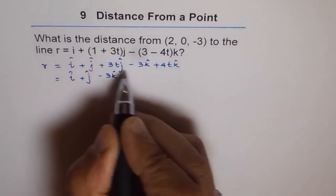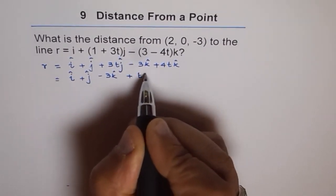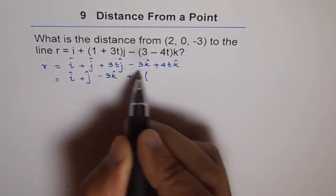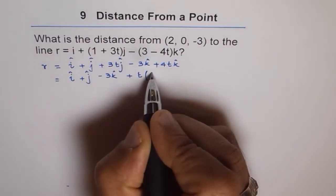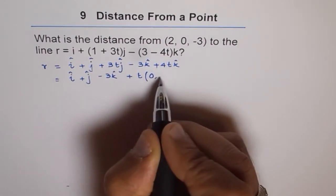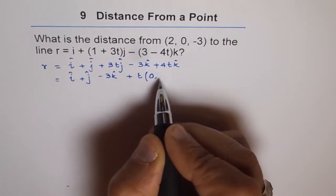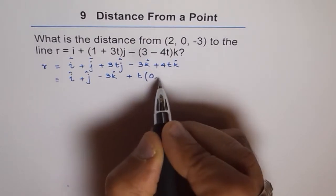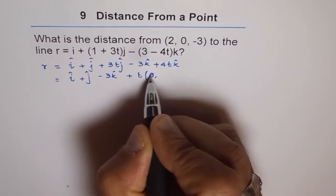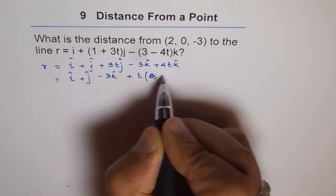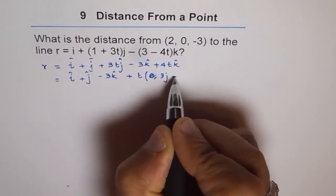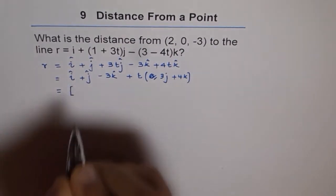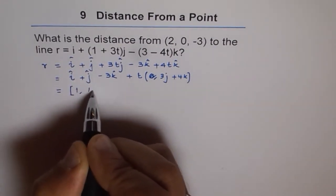And we'll factor out t and write down the components over the t. So it is 3j, so there's no i component, so let's write 0 for i. 3j, so better to write... let me write this as 3j + 4k. Now I'll write this in this form, which is (1, 1, -3).